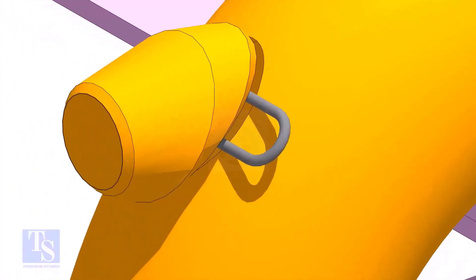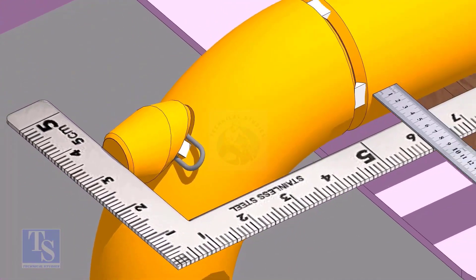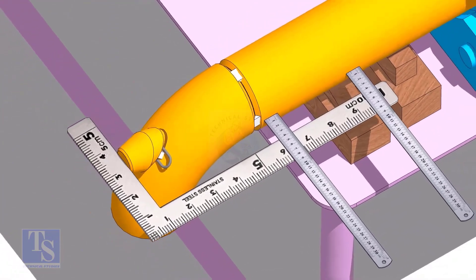Tack weld at one side of the elbow just to hold the elbowlet in its position. Don't make too big or too small tacks. Make the elbowlet face square to the side of the pipe.